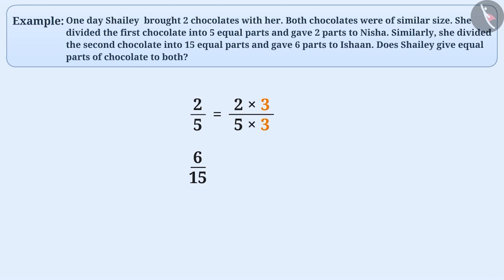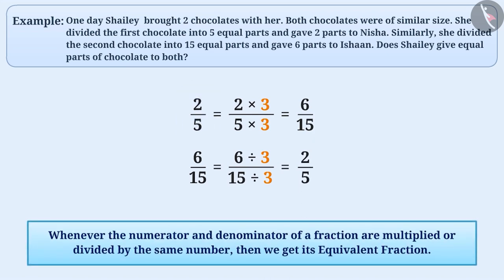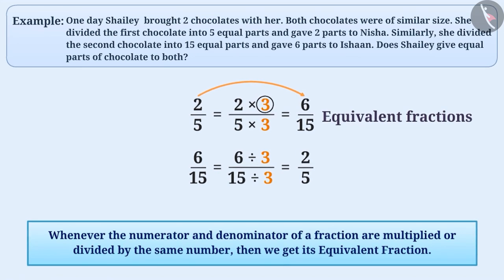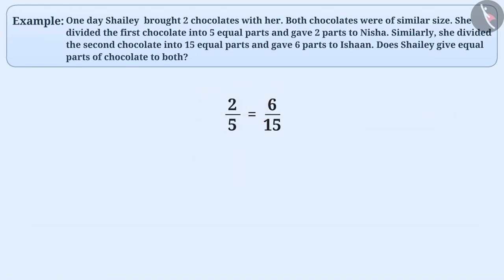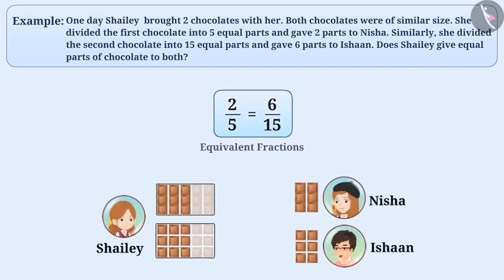If we multiply the numerator and denominator of two by five by three, we get the fraction six by fifteen. Similarly, if we divide the numerator and denominator of six by fifteen by three, we get the fraction two by five. Whenever the numerator and denominator of a fraction are multiplied or divided by the same number, we get its equivalent fraction. Therefore, two by five and six by fifteen are equivalent fractions, meaning Shelley gave equal parts of chocolate to both.